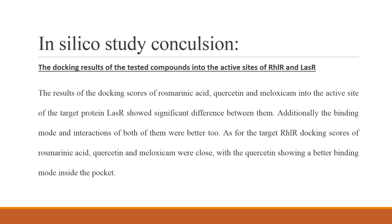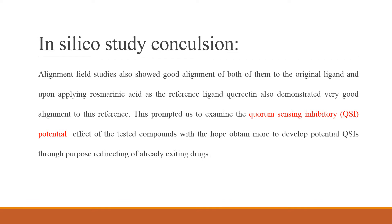The conclusion of the in silico study: docking scores of rosmarinic acid, quercetin, and meloxicam into the active site of LasR showed significant differences in favor of quercetin and meloxicam, with better binding mode and interaction for both. For RhlR, docking scores of all three were very close, with quercetin showing a better binding mode. The field alignment study also showed good alignment of both to the original ligand. Quercetin demonstrated very good alignment to rosmarinic acid as reference, leading us to examine the quercetin inhibitory potential of the tested compounds through purpose-driven reuse of existing drugs.